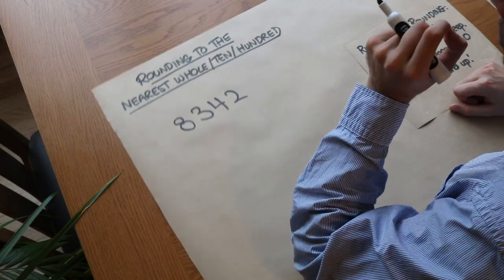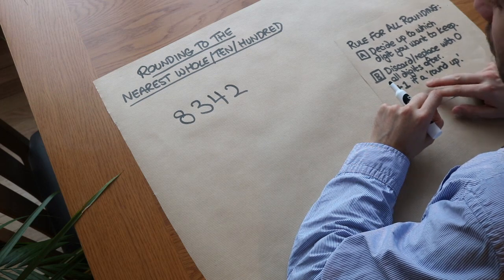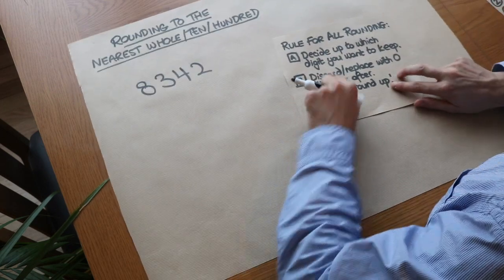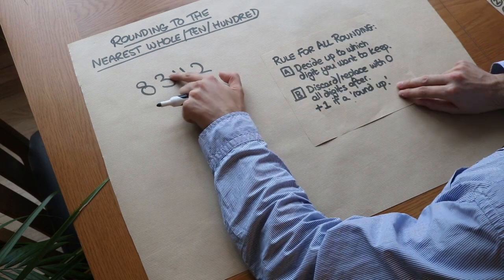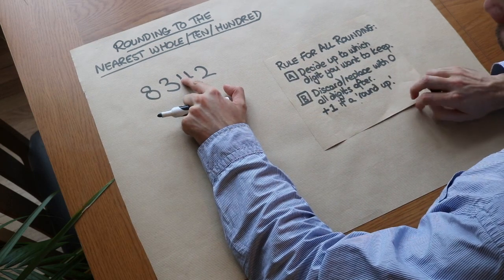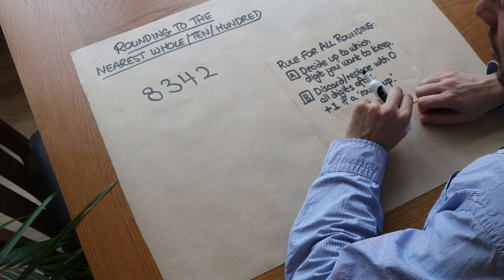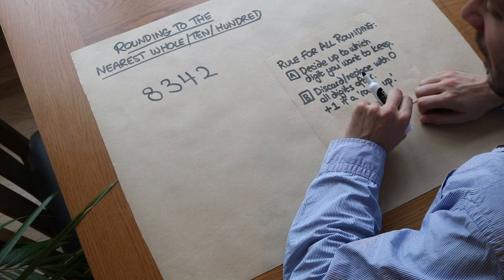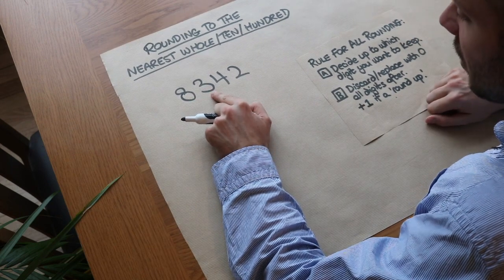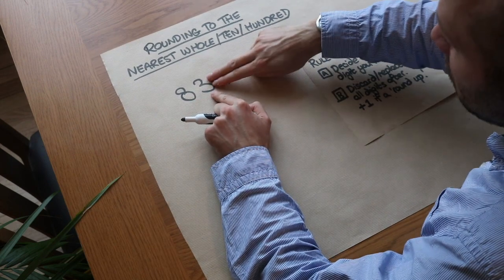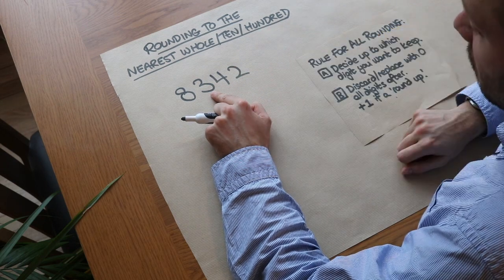The idea of rounding is that you're simplifying a number in some way to discard some of the digits. We decide up to what digit we want to keep, and then we discard - or replace with zero - any digits after that particular digit. For example, if we're rounding to the nearest hundred, we keep up to the hundreds digit but replace everything after with zero.